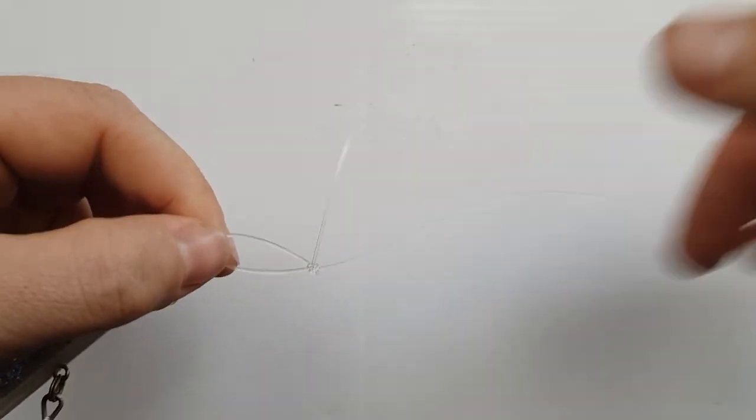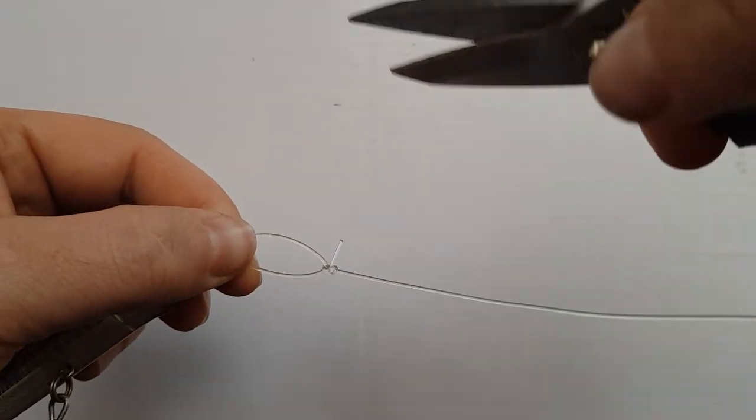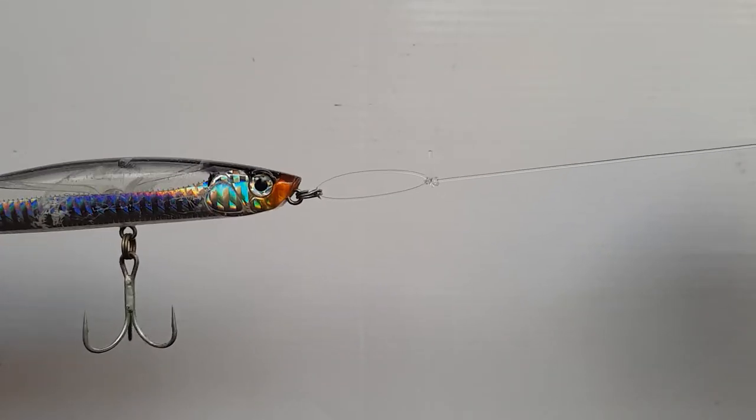So I can yank on that, trim that tag, and that's my loop knot for lure fishing.